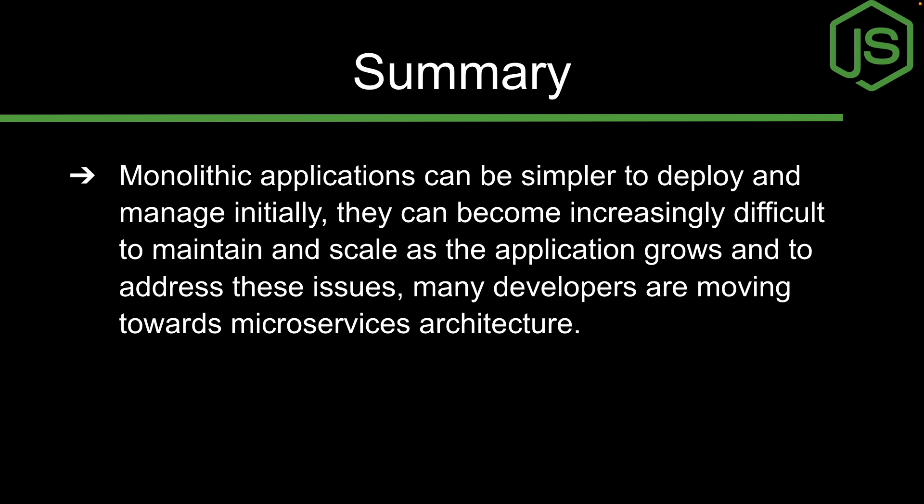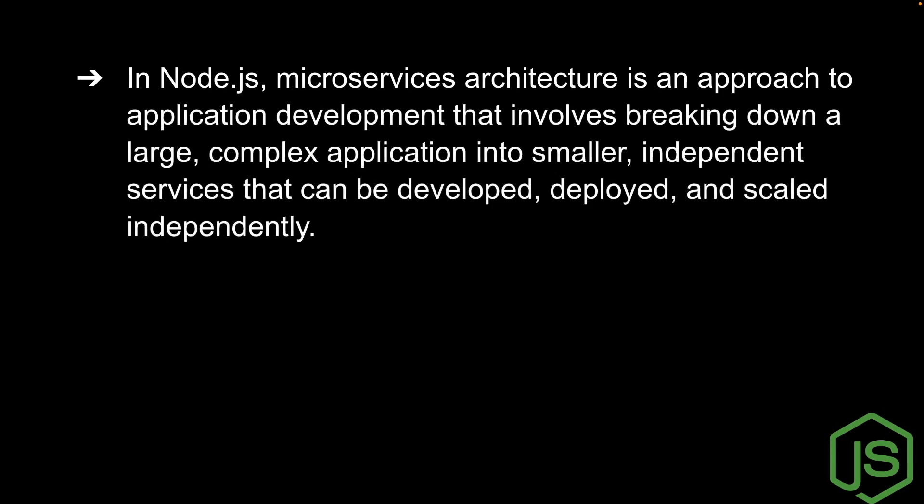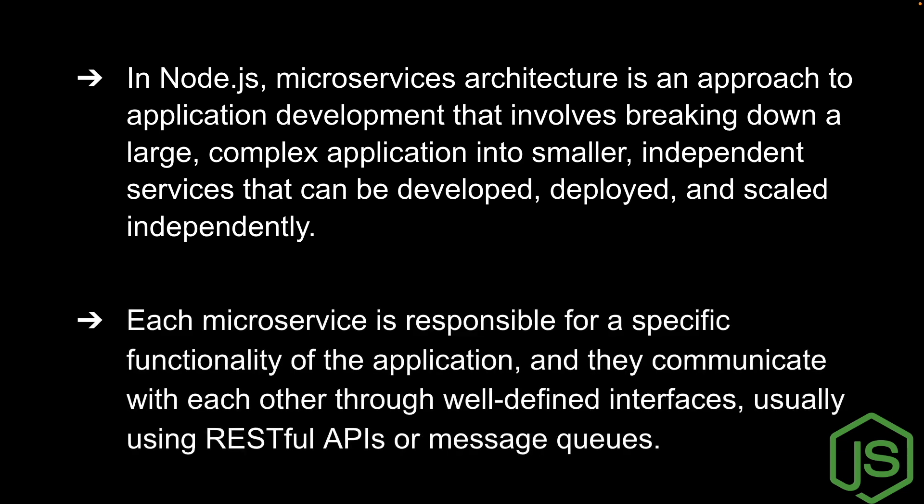Now let's discuss microservices architecture and how we build applications using it in Node.js. In Node.js, a microservices architecture is an approach to application development that involves breaking down a large, complex application into smaller, independent services that can be developed, deployed, and scaled independently. Each microservice is responsible for a specific functionality and communicates with others through well-defined interfaces, usually using REST APIs or message queues.